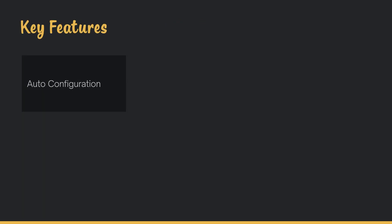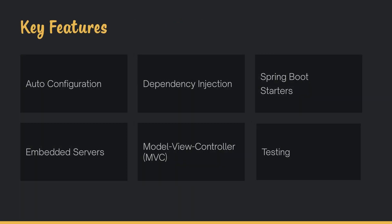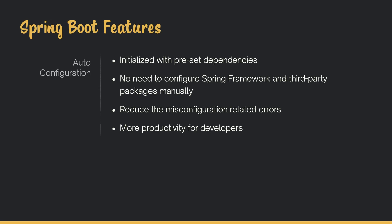Now let's understand some of the key features of the Spring Boot Framework. The first feature is auto configuration. Spring Boot applications are initialized with preset dependencies, so you don't have to configure the underlying Spring Framework and third-party packages as necessary for your application. Auto configuration helps developers reduce the number of errors caused by misconfigurations and makes development more productive.